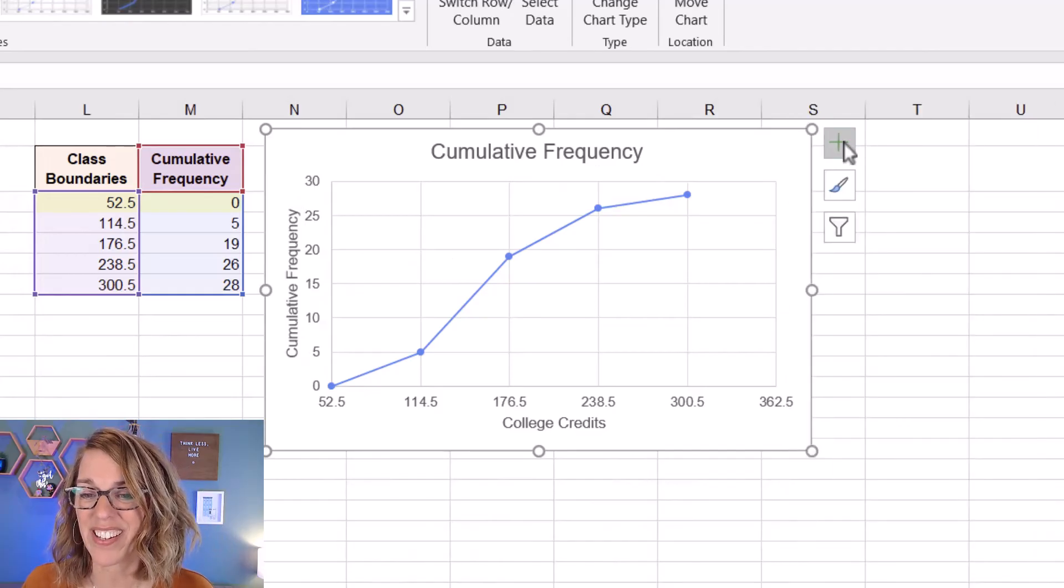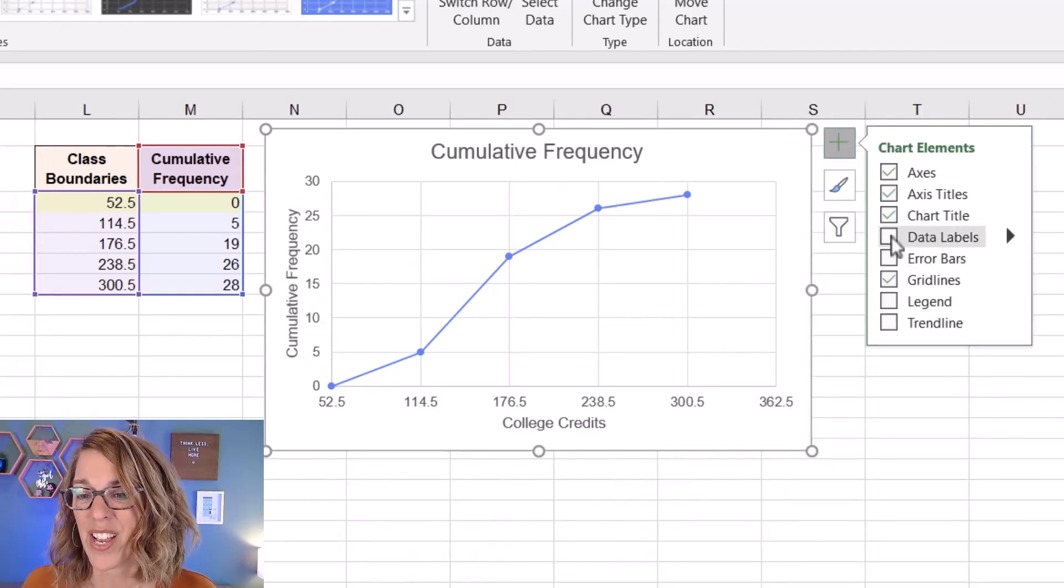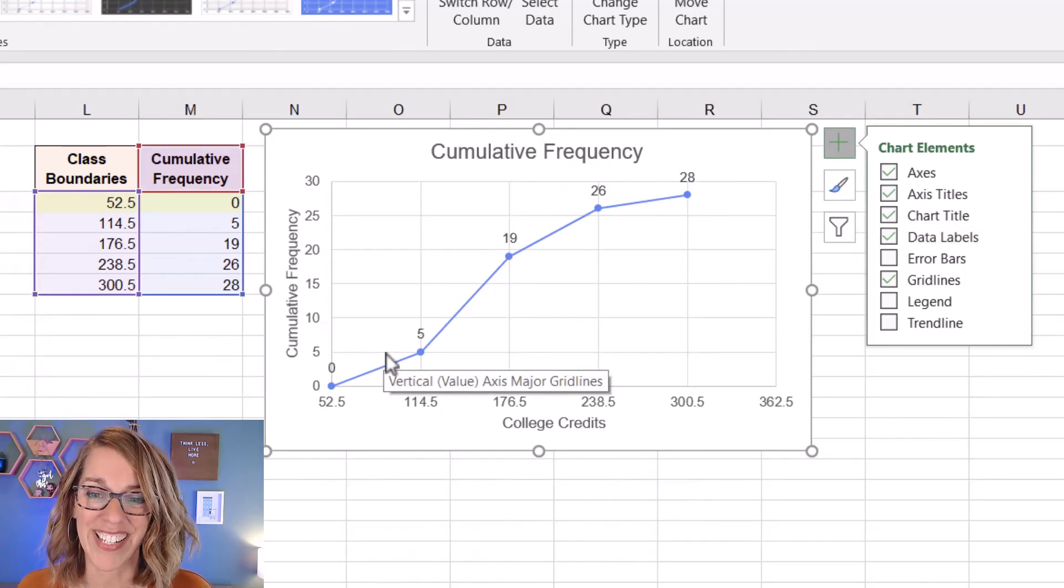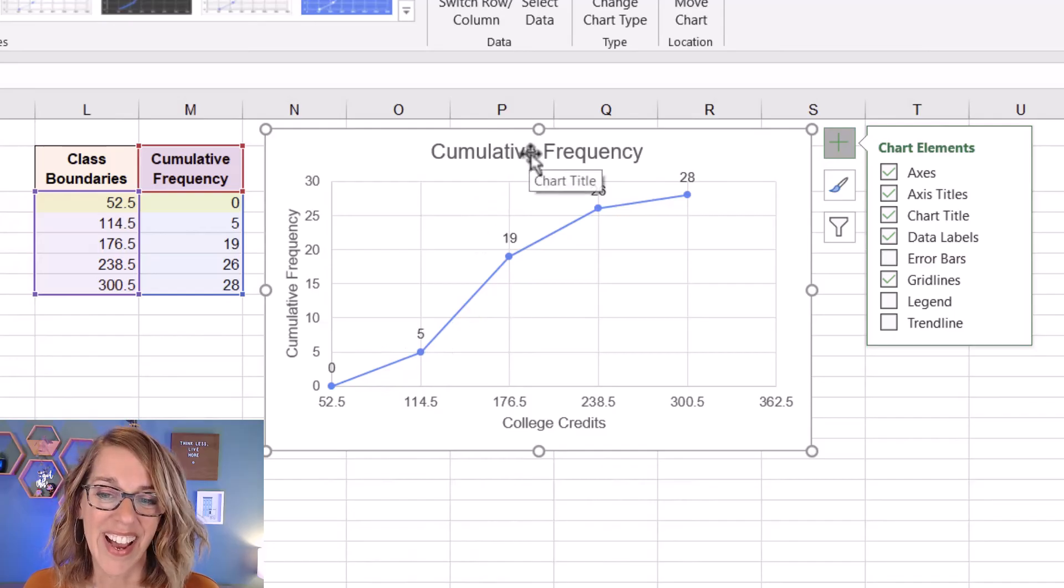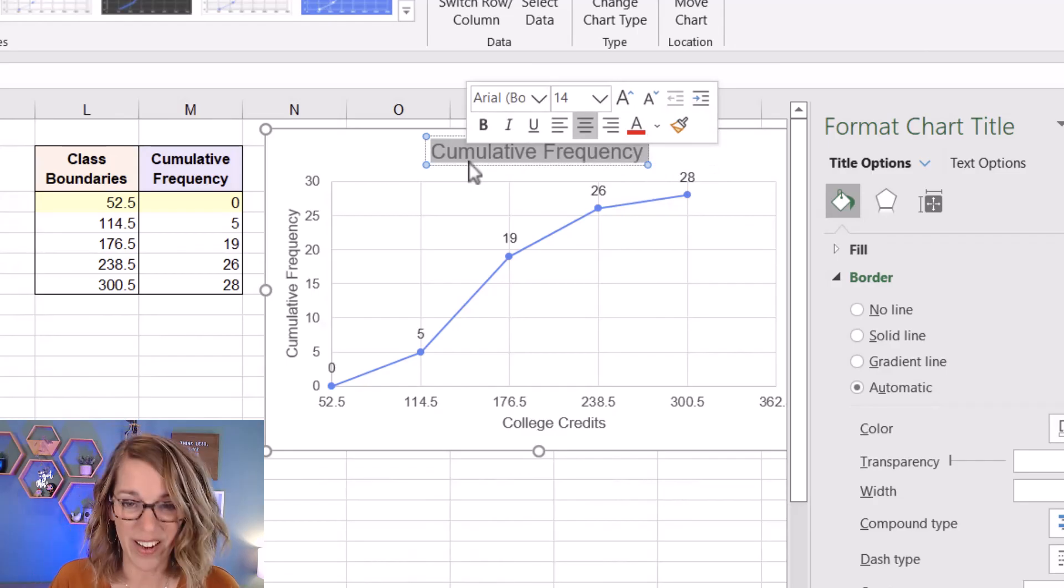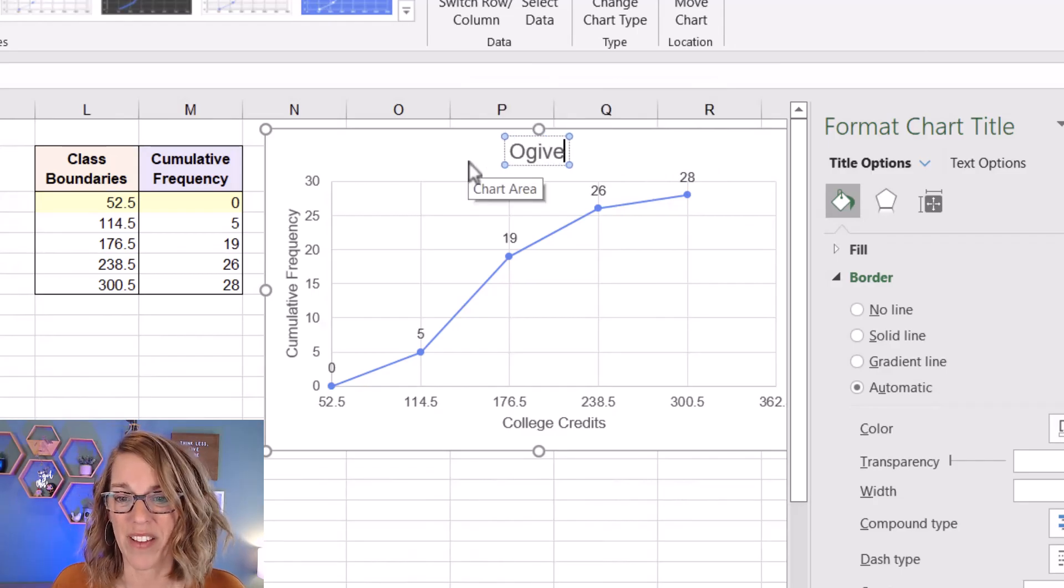Let's go ahead and close this. I'm going to click that plus button again. I am going to add data labels. So I've got that cumulative frequency, that running total labeled on each of my data points. And I'm going to change the title of this chart. I'm double clicking to get into that text box to Ogive.